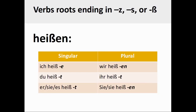This pattern results in the second and third person singular and the second person plural verb forms looking alike: ich heiße, du heißt, er/sie/es heißt, wir heißen, ihr heißt, sie heißen.